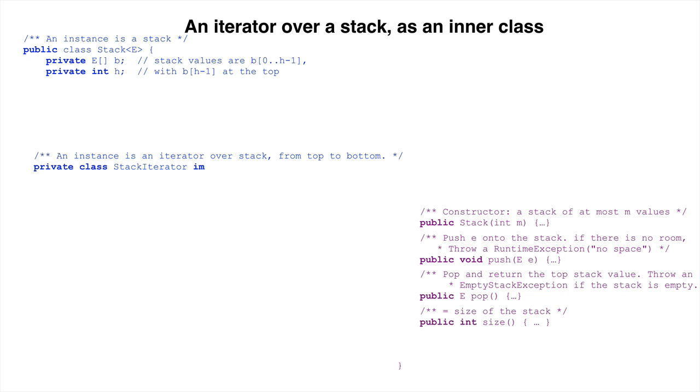We then proceed as we did when writing the iterator over the even values of an array. We begin by putting in the comment and header of the iterator, and stubbing in the two required methods: HasNext and Next.